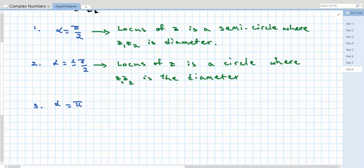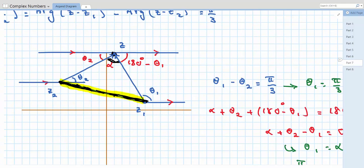So let's go back to our previous diagram. If alpha is to be 180 degrees, that would mean that these two vectors